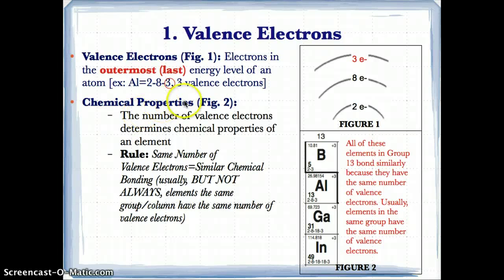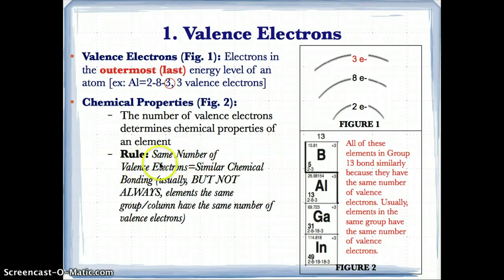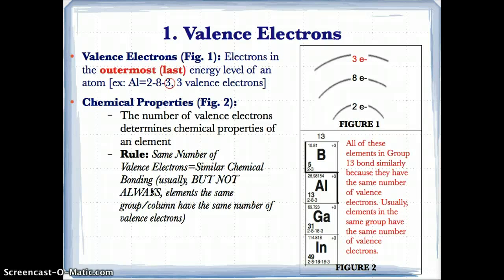Valence electrons relate to chemical properties. Generally, the number of valence electrons determines the chemical properties of an element as well as what compounds it can form. The rule here is that if elements are in the same group or vertical column on the periodic table, they generally have the same number of valence electrons, and therefore they also have similar chemical bonding.